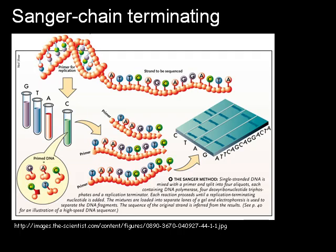The classical chain termination method, or Sanger method, requires a single-stranded DNA template, a DNA primer, a DNA polymerase, radioactively or fluorescently labeled nucleotides, and the modified nucleotide which can terminate DNA strand elongation. The DNA sample is divided into four separate sequencing reactions containing all four of the standard dideoxy nucleotides and DNA polymerase.